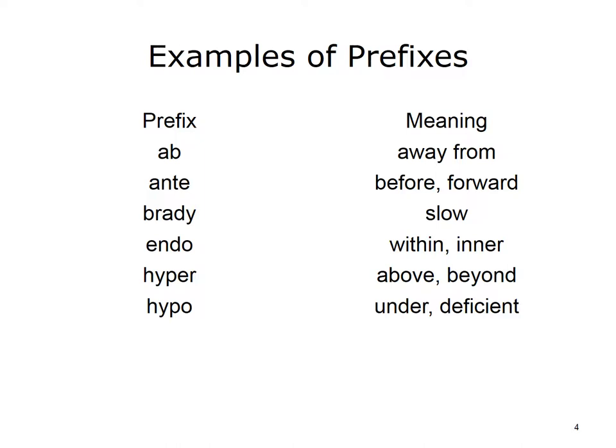Here are more examples of prefixes and their meanings. Ab means away from. Anti means before or forward. Brady means slow. Endo means within or inner. Hyper means above or beyond. Hypo means under or deficient.